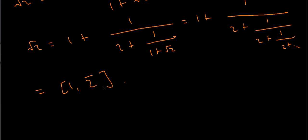In the next video, we'll look at more examples and work on a more general method for finding continued fractions of square roots. It's even possible to find continued fractions for things like the cube root of 2, pi, e, or the golden ratio.